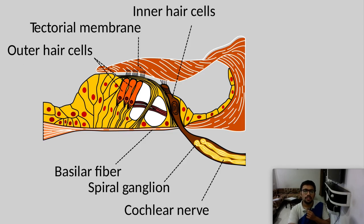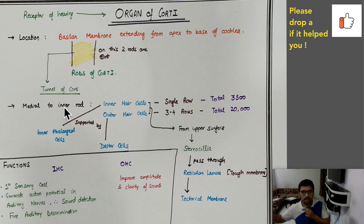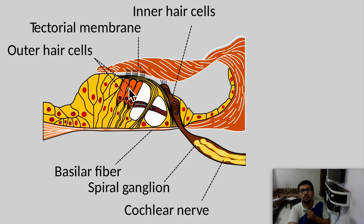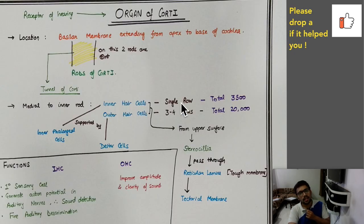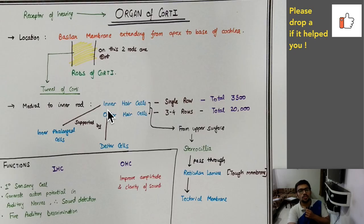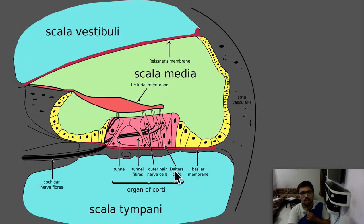The inner rod has inner hair cells on its medial side, and the outer rod has outer hair cells on its lateral side. Inner hair cells are arranged in a single row, whereas outer hair cells are arranged in three to four rows. Inner hair cells are supported by inner phalangeal cells, and outer hair cells are supported by outer phalangeal cells, also called Deiters cells.